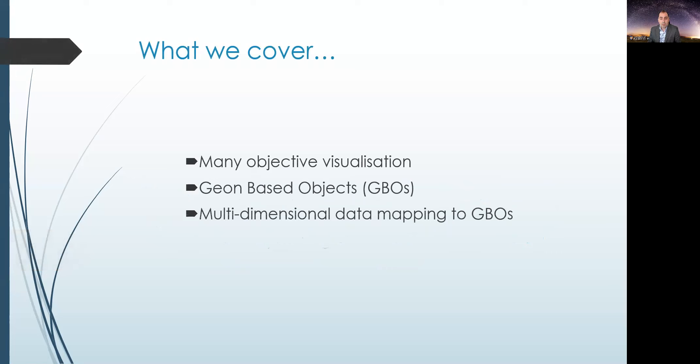We start with a short introduction to many objective visualization and the challenges that it presents, followed by an introduction to visual objects called Geon-Based Objects, GBOs for short. I'll explain more of that later on. We'll cover the mapping process of a many objective dataset to the GBOs themselves. Next, we look at our pilot study methodology and findings, and we're going to discuss what we found out. And finally, we look at the future work and what's next for our visualization approach based on Geons.